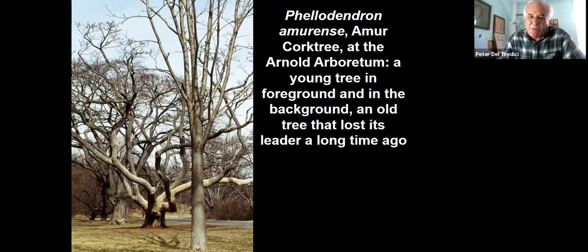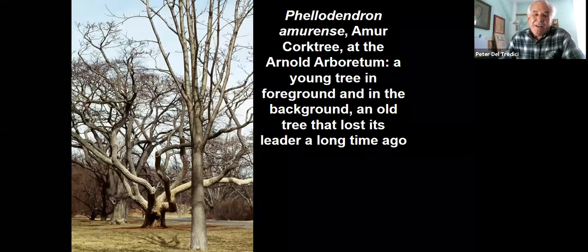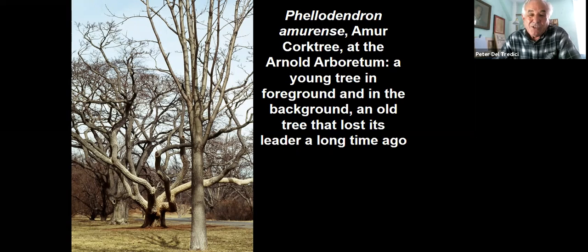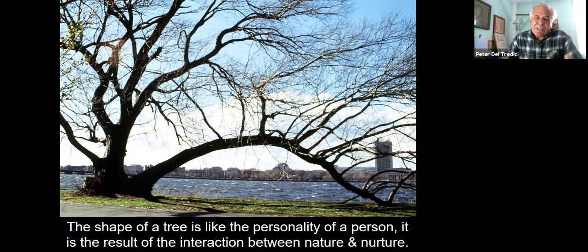Here's another example from the Arnold Arboretum. The tree in the background is an Amur cork tree — one of our famous trees that came down about 20 years ago. People thought, 'If I take a cutting of that tree, it'll have that same form.' But in the foreground, you can see what a young cork tree actually looks like — it has nothing like the form of the one in the background. That's a result of everything that happened over the course of its life; it's not genetic. The shape of a tree is like the personality of a person — it's the product of the interaction between nature and nurture.